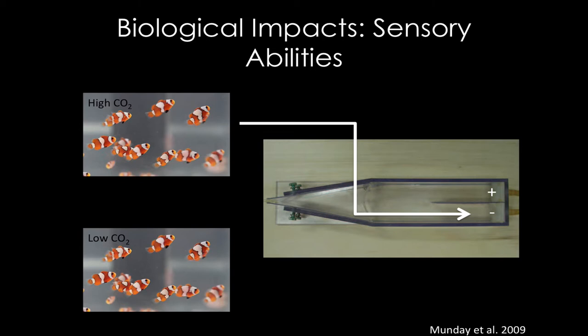A student asked whether predators have the same issue. That's a really good question — I don't know the answer to that. Somebody I work with at the Bodega Marine Lab is looking into that interaction between predators and prey and whether predators can detect their prey. On principle, I imagine they might have a similar issue finding their prey if they use chemical cues in the water.